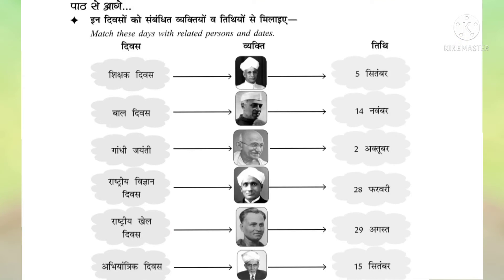Next, there are pictures of some persons and dates. We have to match these pictures with the related persons and dates — Divas, Vekti, Thidi. First one: Baladivas means Children's Day. We celebrate Children's Day on November 14th. So we match Baladivas with Jawaharlal Nehru and select the date 14th November.